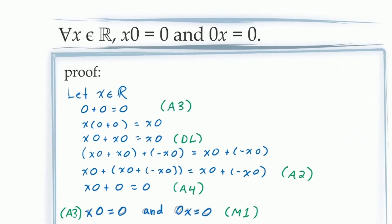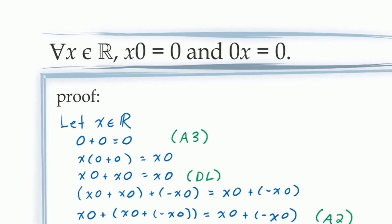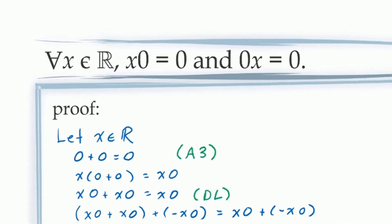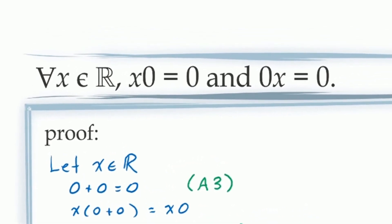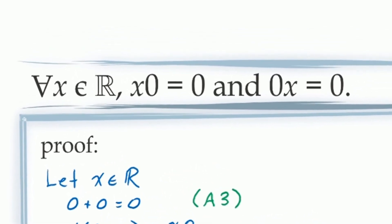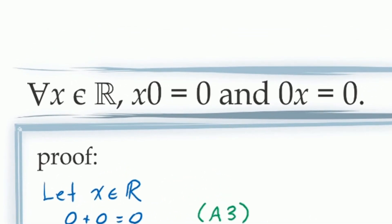Now that we've proven Proposition 1, we are able to use it in any future proofs. So if at any time throughout the course we need the fact that a real number times 0 equals 0, we can do that just by applying Proposition 1.